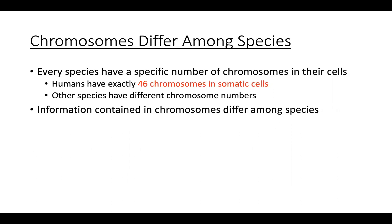There's a lot of genetic testing becoming quite popular nowadays. For example, there's genetic testing for things like the likelihood of your child coming out with Down syndrome and other genetic-based abnormalities. Down syndrome is a genetic abnormality where the individual has too many chromosomes. In a normal human, there are 46 chromosomes in our somatic cells.